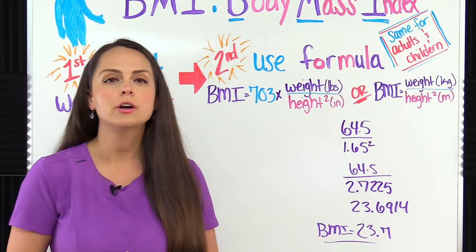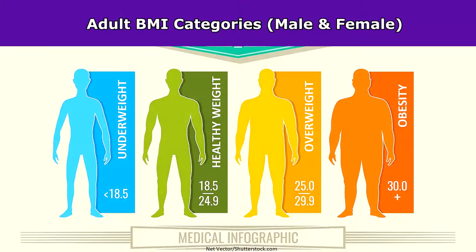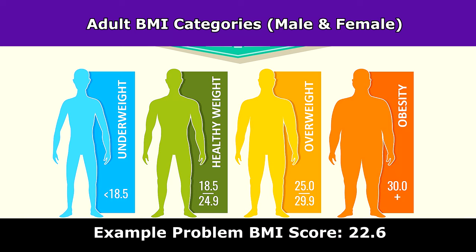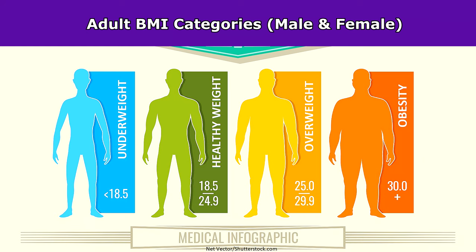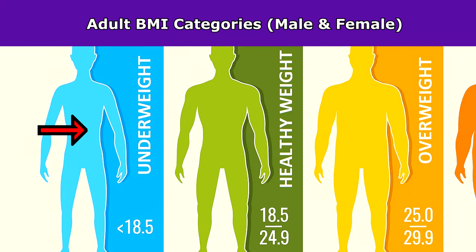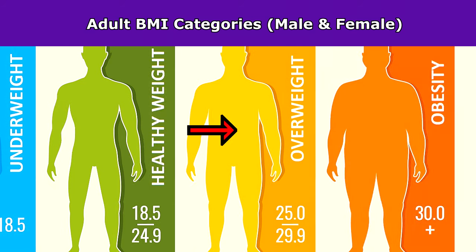Now how do we interpret these BMI scores that we get? Once you have the BMI number you can see which category the patient fits in per the CDC's guidelines. And these are the same for both adult females and males. In our first example that we worked our patient's BMI was 22.6 which falls into a healthy weight category. If the BMI is below 18.5 that's considered underweight. If it's 18.5 to 24.9 that's a healthy weight. If it's 25 to 29.9 that's overweight. And anything 30 and above is considered obesity.